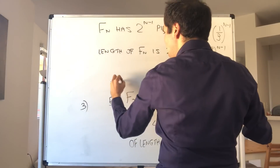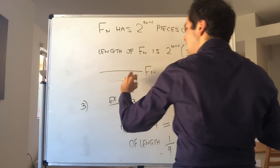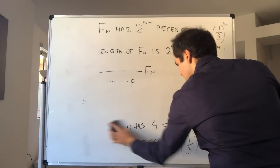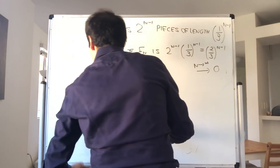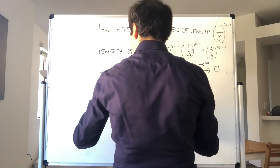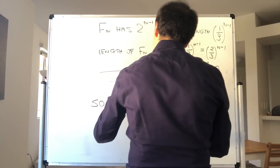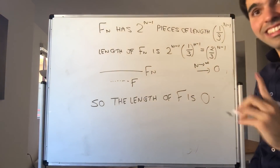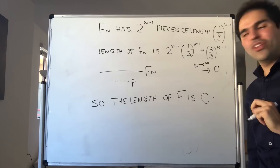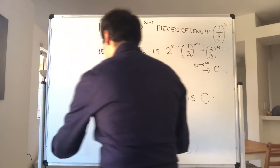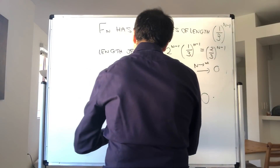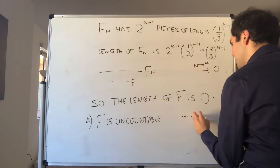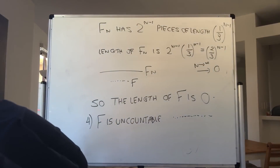So what is the length of F? Well, it's smaller than the length of any of the Fn's, so the length of F is actually 0. The measure of F is 0. That said, even though the length is 0, the cool thing is F is uncountable. You have to picture F as being a huge number of just dust, which has size 0.